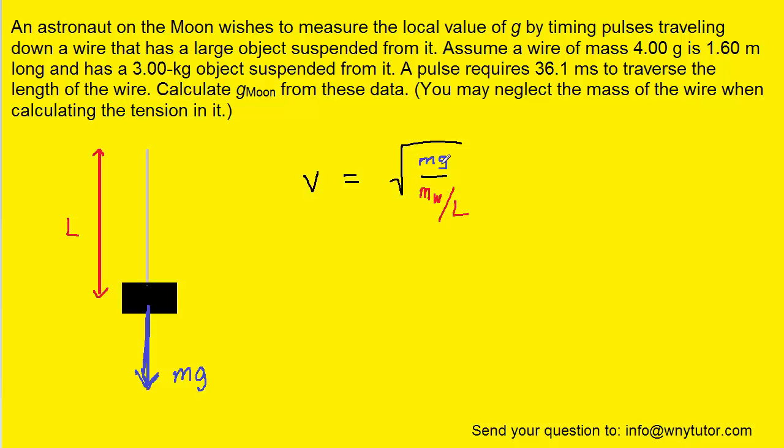Now our goal is to solve for g, which is sort of trapped under the square root. So if we square both sides of the equation, that's going to get rid of the square root. We could then multiply both sides of the equation by that term mass of wire over length, so that it cancels out on the right hand side. And then finally to isolate g, we just divide by m, the mass of the block on both sides.